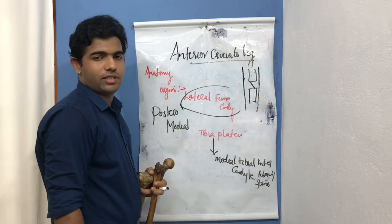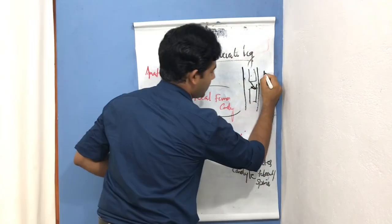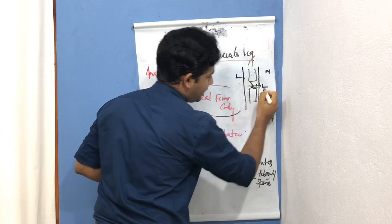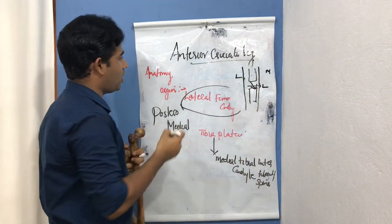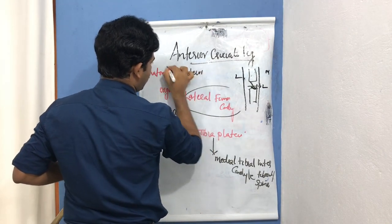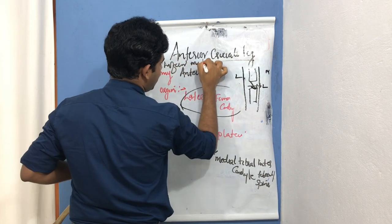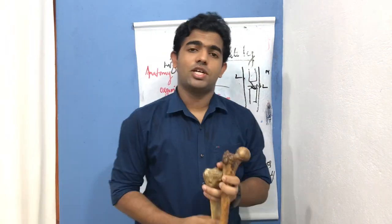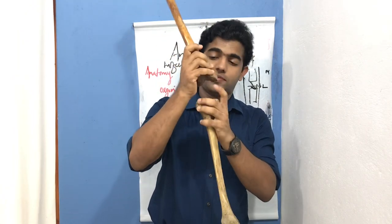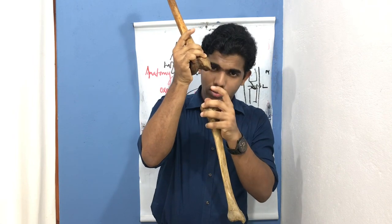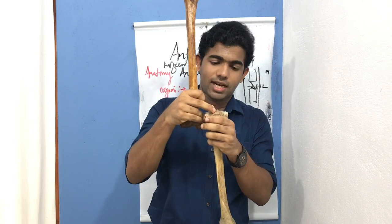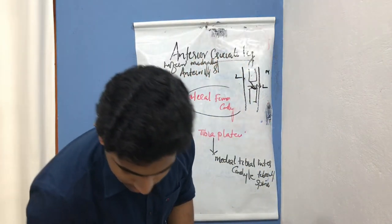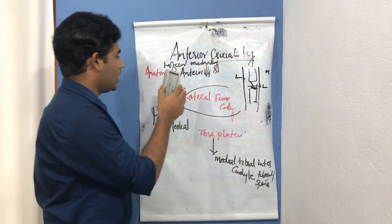The fibers run inferiorly, medially, and anteriorly. This is the inferior direction; this is the medial side, this is the lateral side, and the direction is not posterior but anterior. So the direction of the fibers is inferior, medial, and anterior — down to the medial side, into the medial intercondylar tubercle, and anterior to that. This is the anatomy of the anterior cruciate ligament: it is a cross-shaped or X-shaped ligament starting from the lateral femoral condyle to the medial tibial intercondylar tubercle.